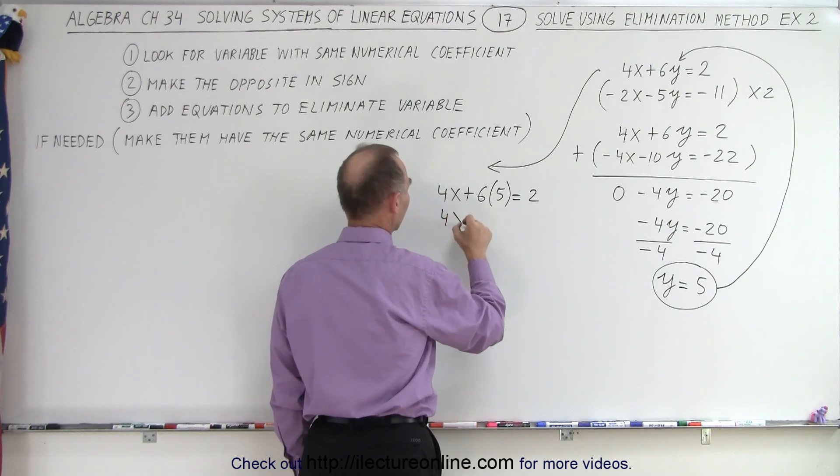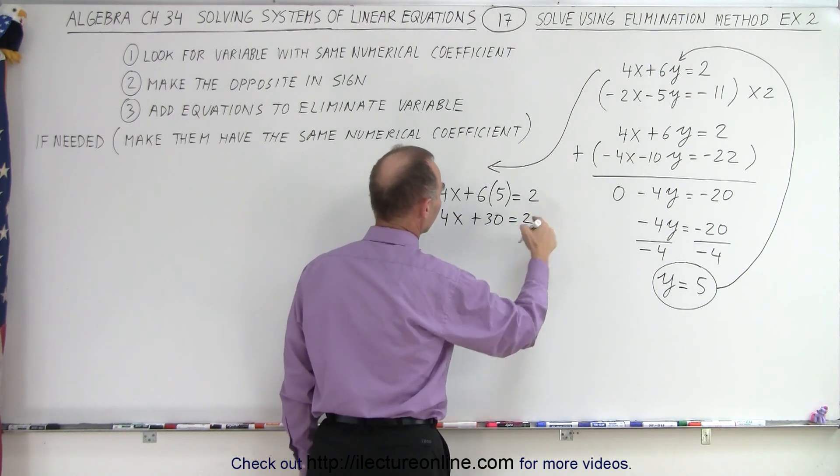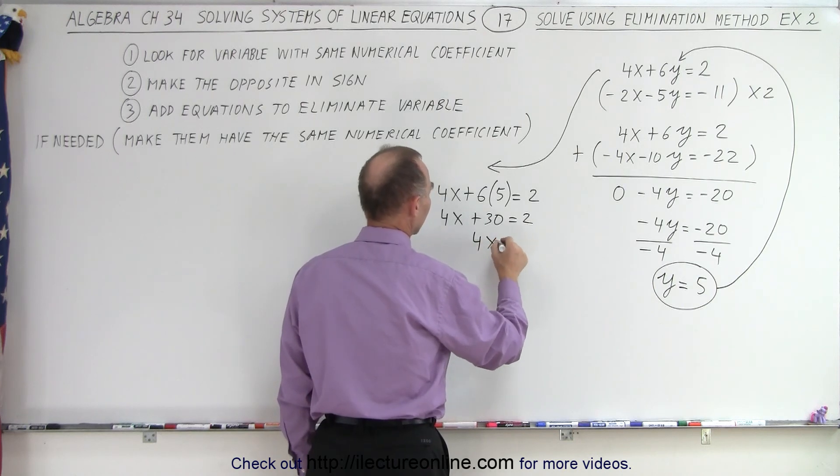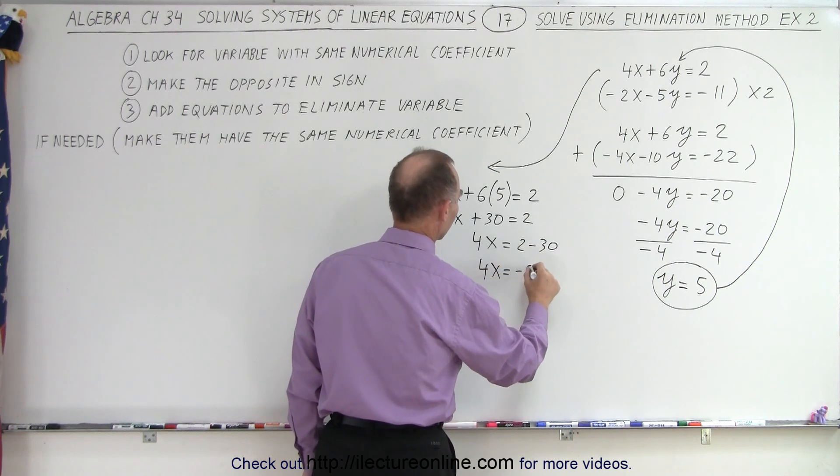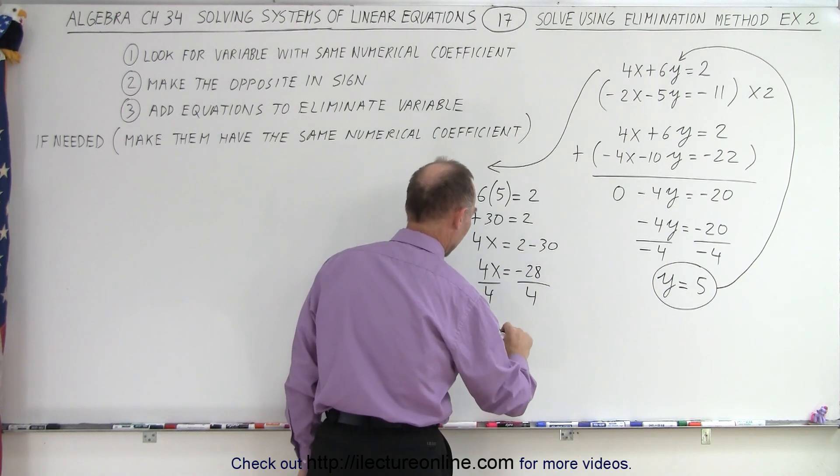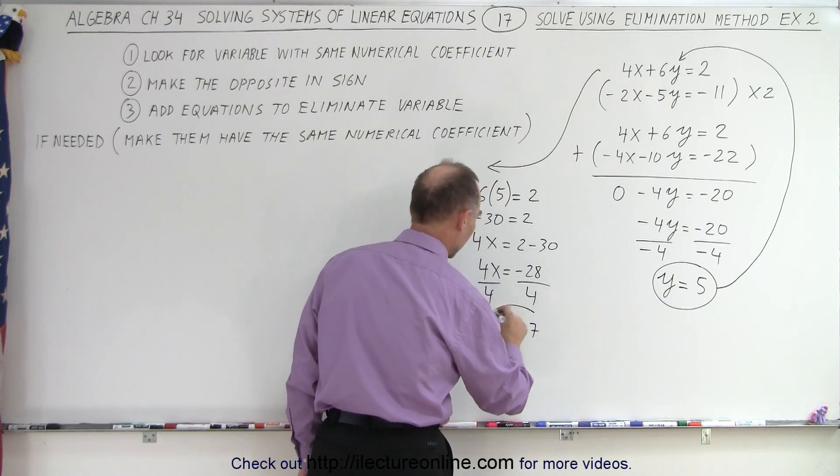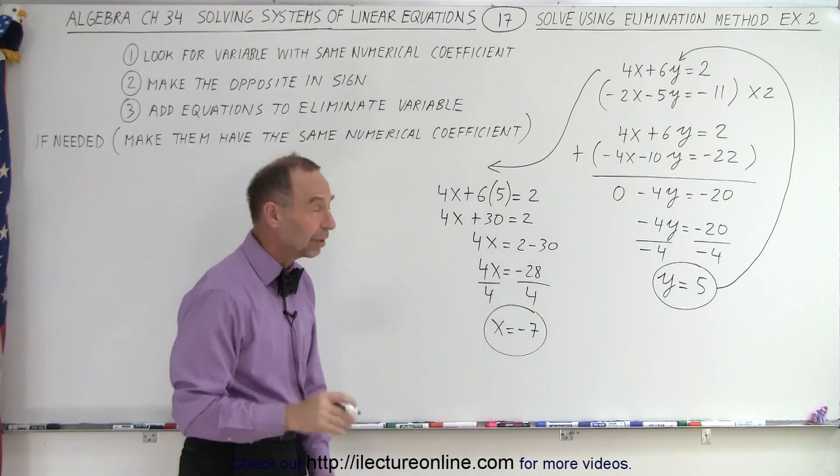That gives me 4X plus 30 is equal to 2. Bring the 30 over to this side, I get 4X is equal to 2 minus 30, or 4X is equal to minus 28. Now I can divide both sides by 4, and I get X is equal to minus 7.